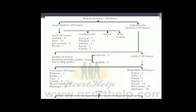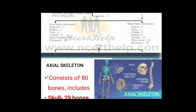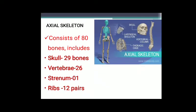The axial skeleton's 80 bones are divided into four regions: 29 bones in the skull, 26 in the vertebrae, 1 in the sternum, and 12 pairs (24 bones) in the ribs. The axial skeleton system consists of 80 bones: 29 in skull, 26 in vertebrae, 1 in sternum, and 12 pairs that is 24 bones in ribs.